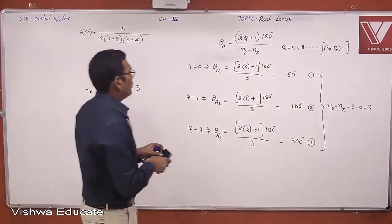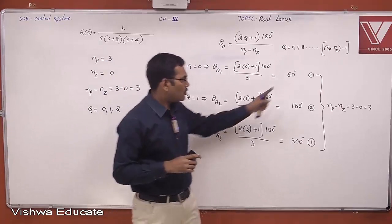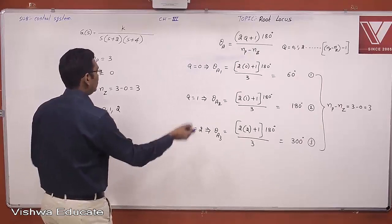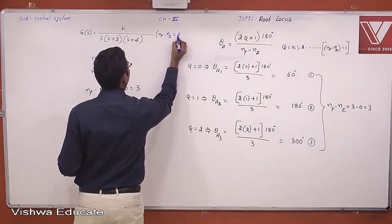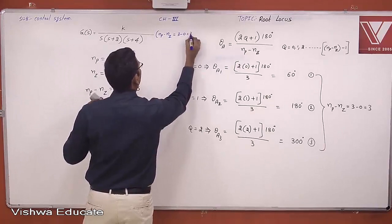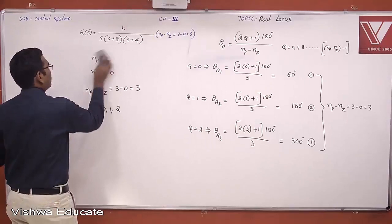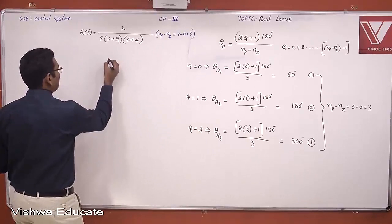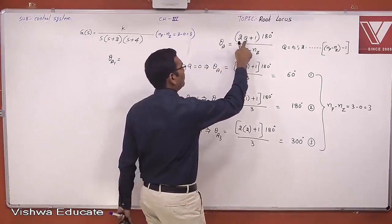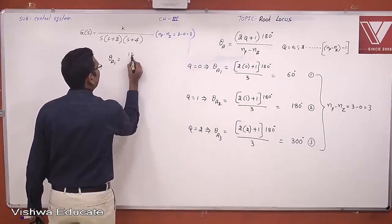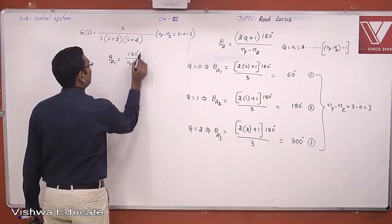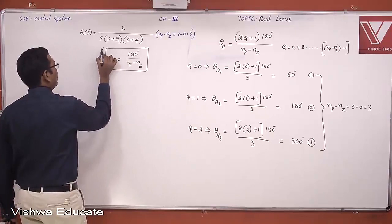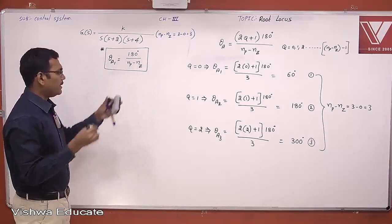An important point: the total number of angle of asymptotes equals the difference between poles and zeros, which is 3. The first angle of asymptote is always 180° / (Np − Nz). For this problem, the first angle is 180° / 3 = 60°. This is the first angle of asymptote formula for any problem.